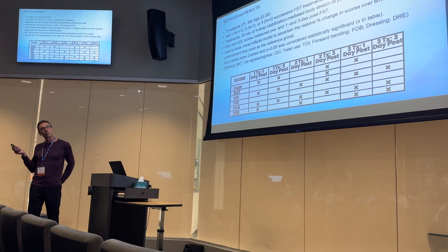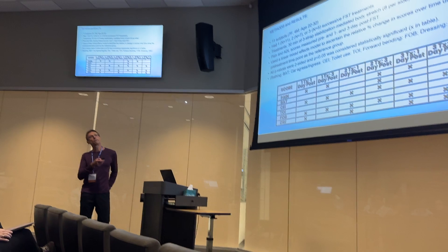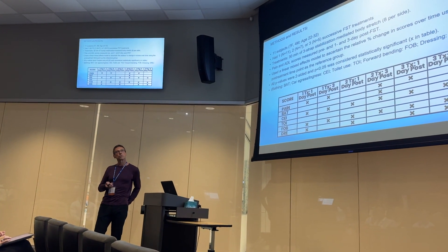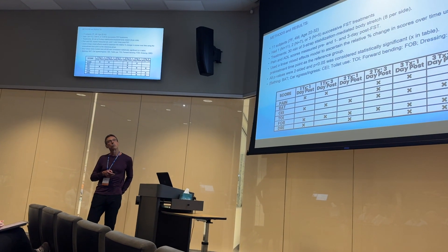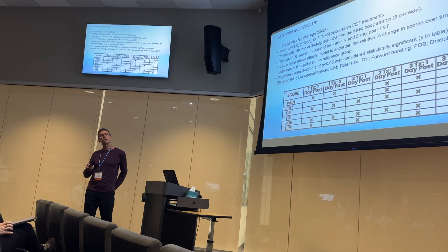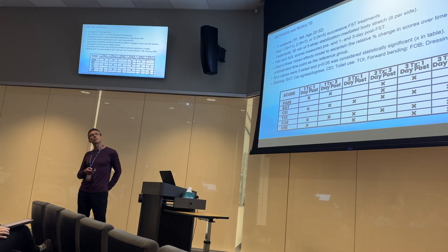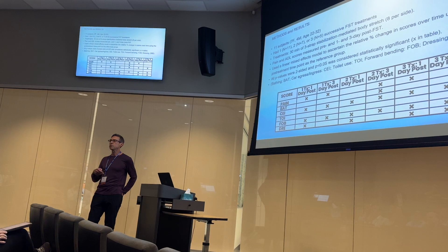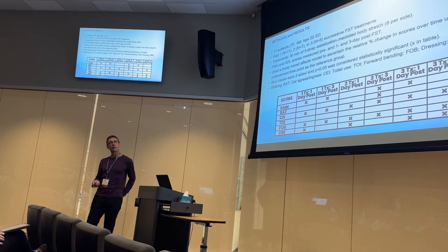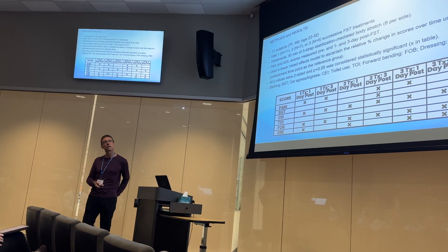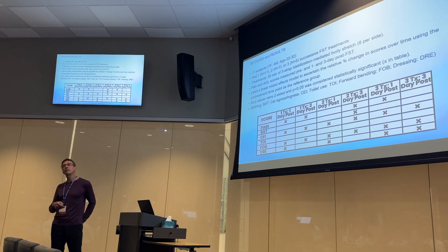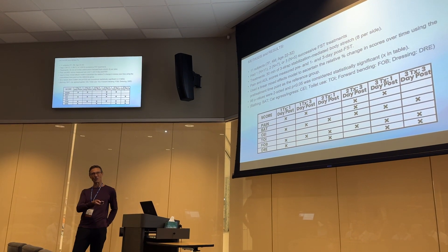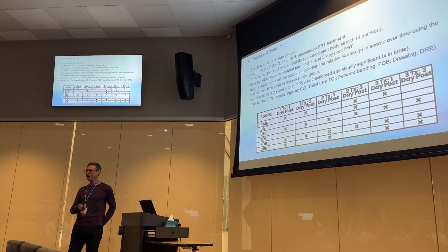Methods and results: we had 11 subjects — seven females, four males — between the ages of 22 and 32. We had one, two, or three successive FST treatments week by week. Treatments consisted of 30 minutes. Three straps were used to stabilize one leg down on the table, and we did eight stretches per side. I have to say, my wife was the clinician in this study — she did all of the work. I'm the writer in the family.